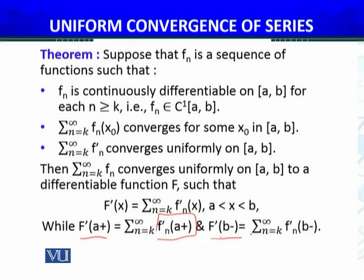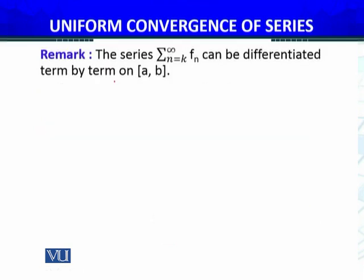How to apply that result? The remark is: the series summation n equals k to infinity fn can be differentiated term by term on the interval [a,b] under the hypothesis of the previous theorem. And what are those? Three conditions: fn belongs to C1[a,b], and we have to apply this to examples.